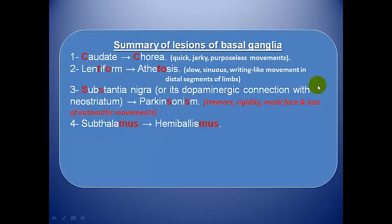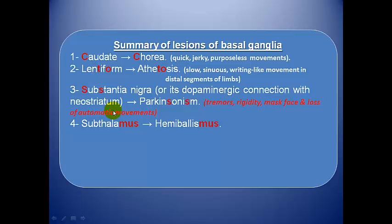Lesions of the basal ganglia are related to arterial supply, so memorize that well. The most famous is the lesion of the substantia nigra and the dopaminergic connection with the neostriatum, which produces Parkinsonism. Caudate lesion produces chorea, lentiform lesion produces athetosis, and lesion of the subthalamic nucleus produces hemiballismus. These are all physiological correlates and are easy to remember.